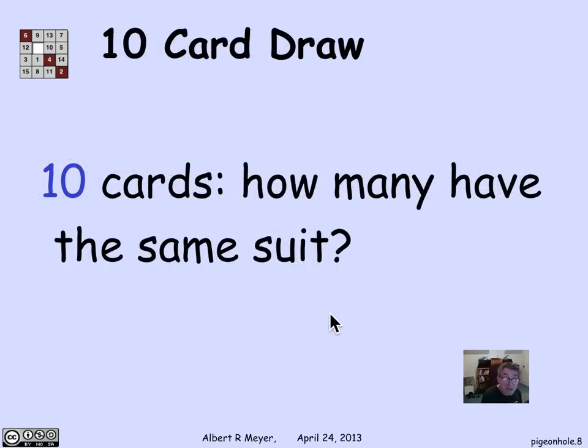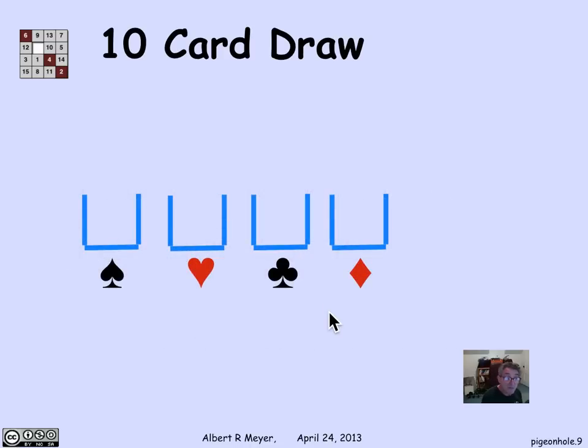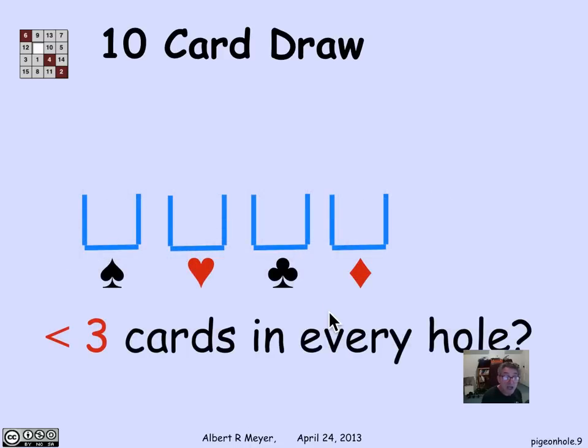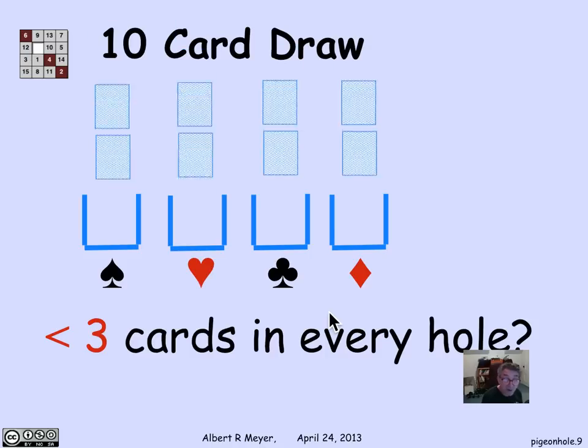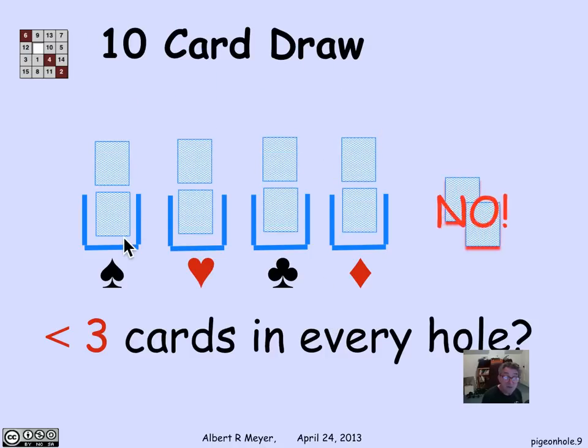Slight generalization. Suppose I have 10 cards. How many cards must I have of the same suit? What number of cards of the same suit am I guaranteed to have, no matter what the 10 cards are? Well, if I have the four slots and I'm trying to distribute 10 cards, is it possible that I had less than three cards in every hole? No, because if I have only two cards in every hole, then I have at most eight elements. And I got 10 to distribute in the four slots. I have to bunch them up and have at least three cards in the same suit. You can check that I needn't have any more, of course.